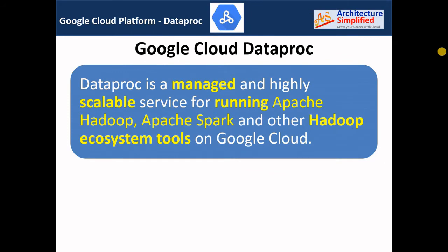First of all, Dataproc is a managed service. A managed service means that hardware updates, software installation, and their maintenance activities are all taken care of by Google Cloud, so you as a user don't have to worry about hardware and software installation updates. If you have an Apache Hadoop application running in your data center, one of the biggest pain points is the operational overhead for maintaining the infrastructure. But in Dataproc, you don't have to worry about the operational aspects — you can focus on your application, its data, and the insights you want to get from the data.